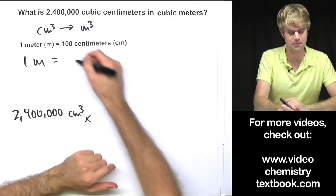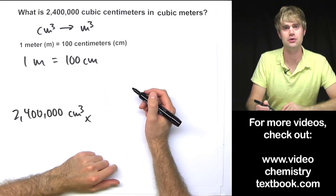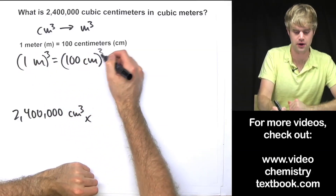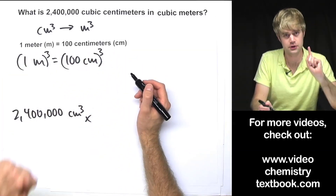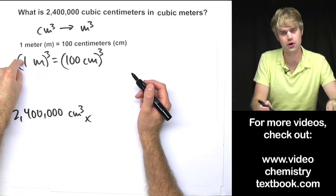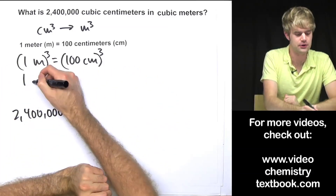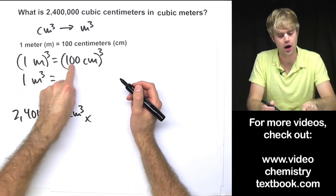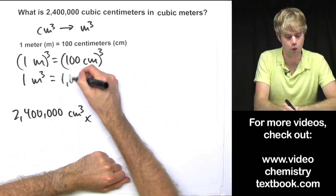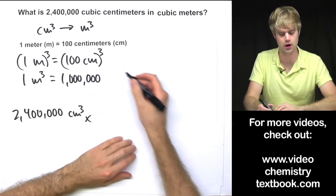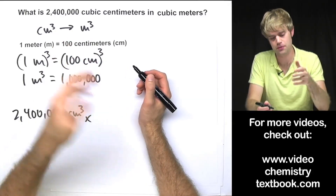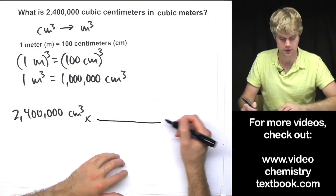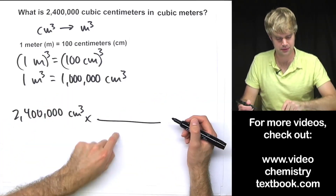To get this into a relationship that gives us cubic centimeters, we're going to rewrite 1 meter equals 100 centimeters and now cube both sides of the equation — this to the third and this to the third. Distributing: 1 to the third equals 1, meters to the third gives us 1 cubic meter, and 100 cubed is 1,000,000 — that's 100 times 100 times 100. The cube distributed onto centimeters gives us cubic centimeters.